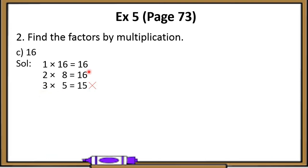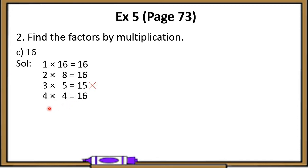So let's move to number 4. When we divide 16 by 4, this gives us a remainder 0. That means 4 is a factor of 16. So the multiplication fact is 4 multiplied by 4 is equal to 16. We have learnt that we write a number only once, no matter how many times it repeats. So the factors of 16 are 1, 2, 4, 8, and 16.